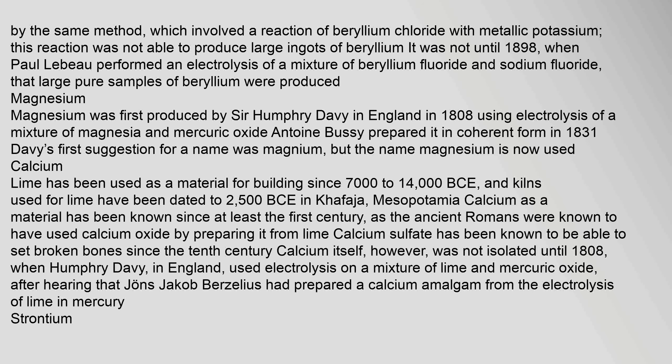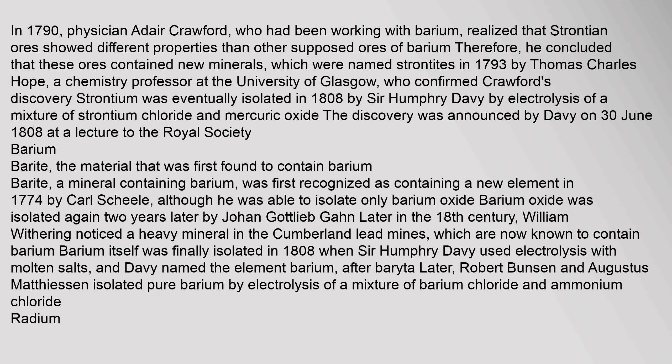Magnesium was first produced by Sir Humphrey Davy in England in 1808 using electrolysis of a mixture of magnesia and mercuric oxide. Antoine Bussy prepared it in coherent form in 1831. Davy's first suggestion for a name was 'magnium,' but the name magnesium is now used. Lime has been used as a building material since 7,000 to 14,000 years ago. In 1790, physician Adair Crawford realized that strontian ores showed different properties than barium ores, and Thomas Charles Hope confirmed the discovery in 1793. Strontium was eventually isolated in 1808 by Sir Humphrey Davy.